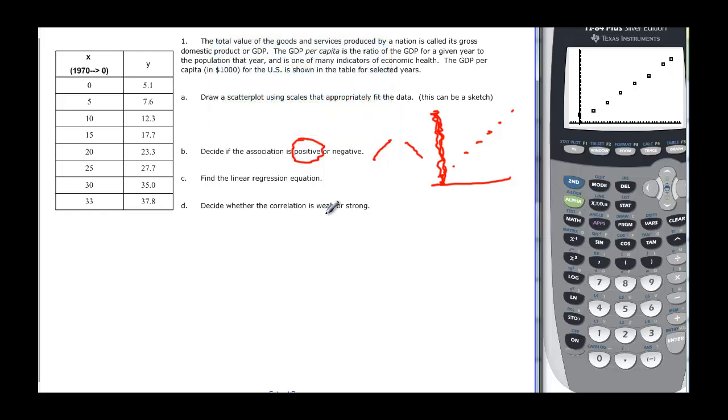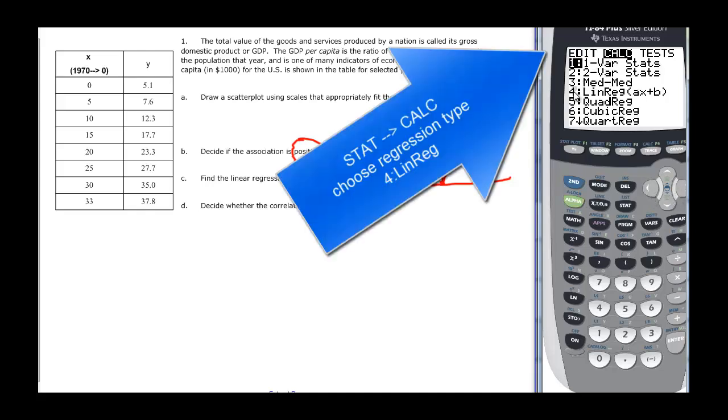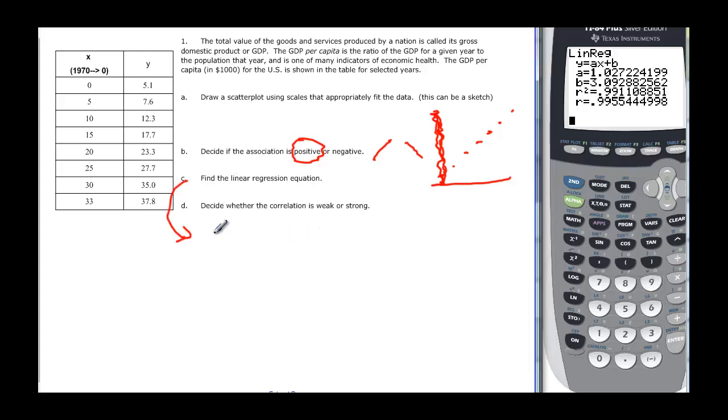And then we want to find the linear regression. So we come back over to Stat, and then over here at Calculate, you need to arrow over, right arrow to calculate, and then we choose 4, which is linear regression. The most common ones we'll use will be linear regression 4 and 5, which is quadratic regression. But we just have to hit the number 4, and then press Enter, because that's the kind of regression we want. And it's going to give us our equation here, and say that that's y equal ax plus b. So a is 1.027, so y is equal to 1.027x plus b, and b is positive, so it's plus 3.093.